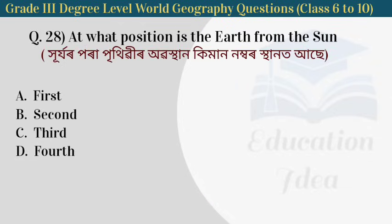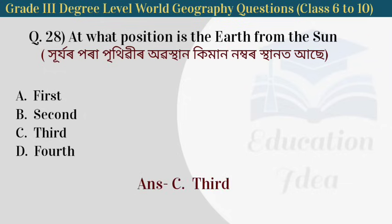Next question: at what position is the Earth from the sun? The answer is third — Earth is at the third position from the sun.